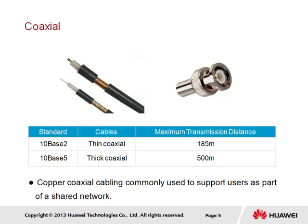Connector types include the BNC connector for 10Base2, as shown here, as well as the N-type connector used for 10Base5. With a transmission capability of 10 Mbps, coaxial's use in today's networks is generally limited.